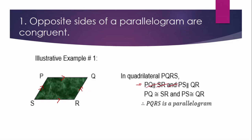But even though we do not have that parallel statement, we can still say that quadrilateral PQRS is a parallelogram because segment PQ is congruent to SR, and segment PS is congruent to segment QR. Condition number one: if the opposite sides of a quadrilateral are congruent, then it is a parallelogram.